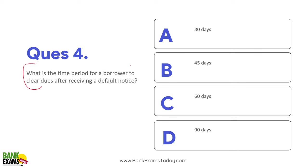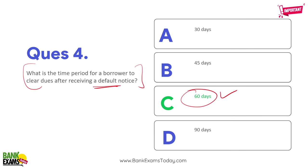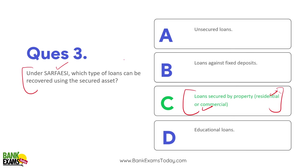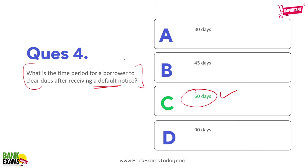Question: What is the time limit for a borrower to clear dues after receiving a default notice? Within 60 days of receiving the default notice, the borrower must clear the dues — otherwise the bank will attach the property and put it up for auction under SARFAESI. This question is also very important and repeats frequently.